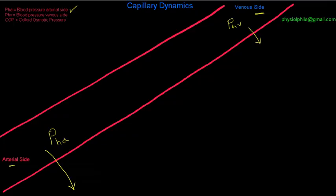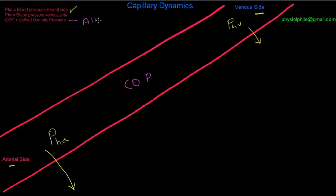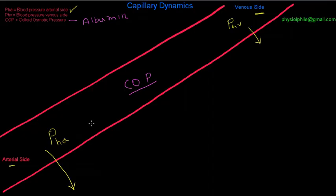Those are the two pressures coming from the force of contraction of the left ventricle, or really the blood pressure. Now let's consider another pressure: the colloid osmotic pressure. The colloid osmotic pressure is due to the presence of albumin in the capillary. Albumin is in the capillary, and there isn't really any albumin out in the tissue space. Being an osmotic pressure, the albumin molecules are drawing fluid into the capillary.